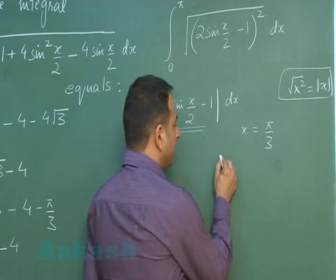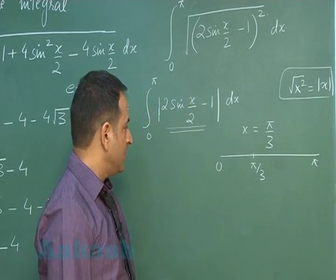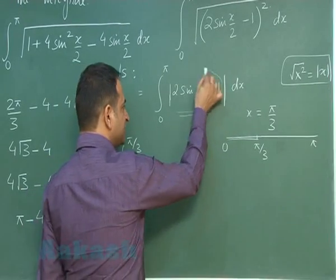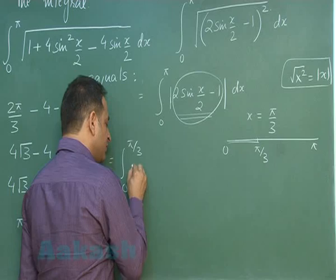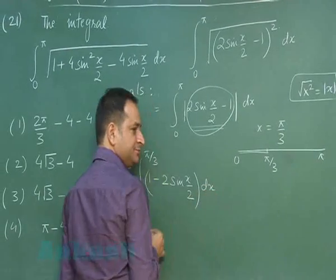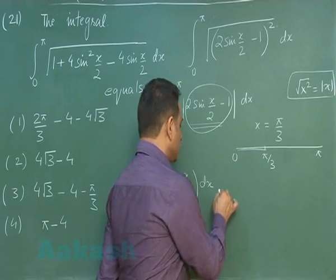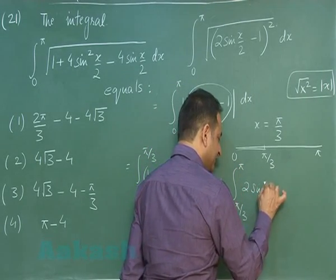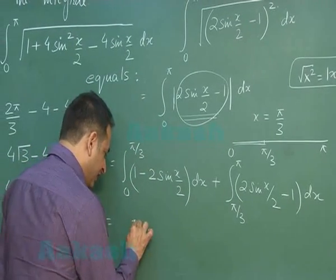When moving from 0 to π, the value becomes 0 at π/3. From 0 to π/3, the value inside the modulus is negative, so we open the modulus with a negative sign. From π/3 to π, the value is positive, so we open the modulus with a positive sign. The remaining integration is straightforward from here.